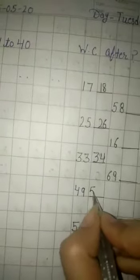Next is 4, 9, 49. After 49 comes 5, 0, 50.